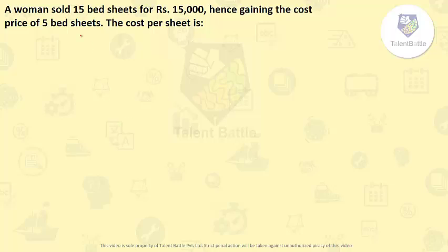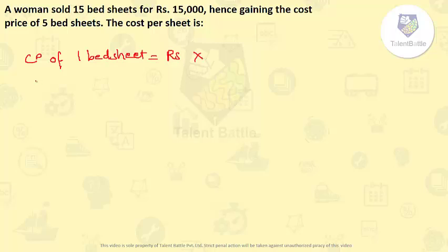A woman sold 15 bedsheets for Rs 15,000, hence gaining the cost price of 5 bedsheets. What is the cost per sheet? Let us consider the cost price of 1 bedsheet as Rs X. Similarly, the cost price of 15 bedsheets will be Rs 15X.